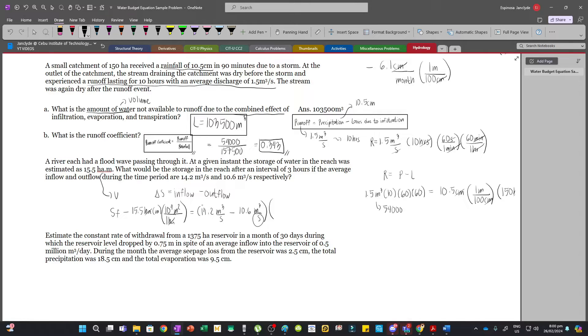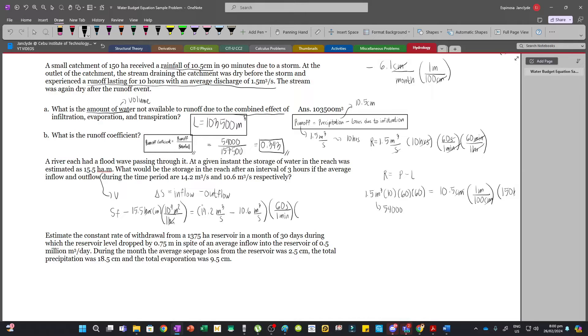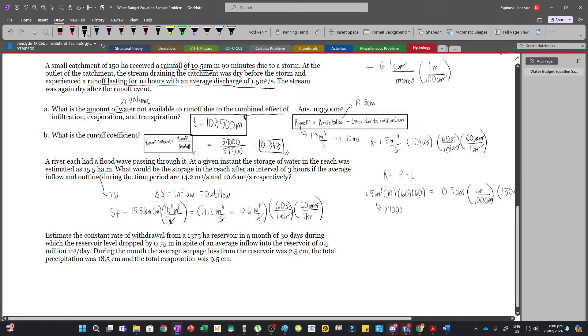We will multiply that by 3 because this is the interval we are considering. And so 60 seconds is 1 minute and then 60 minutes is 1 hour. And so these will cancel and then we are left with hour. And then we need to multiply this by 3 hours so that we are left with volume.